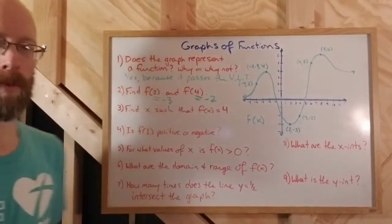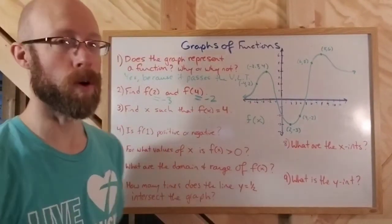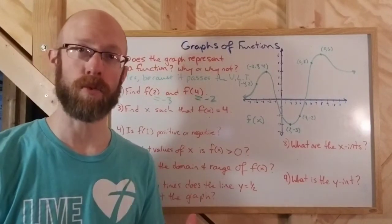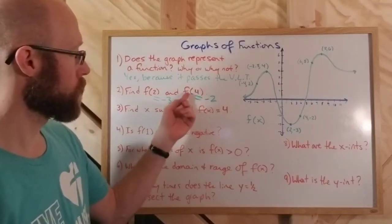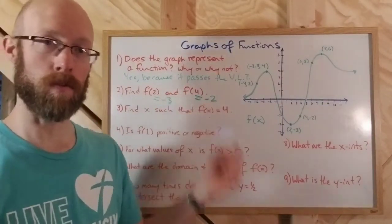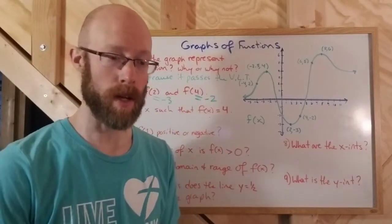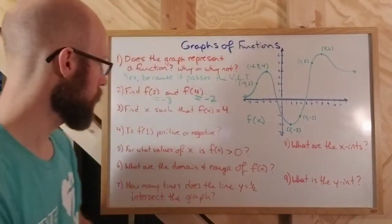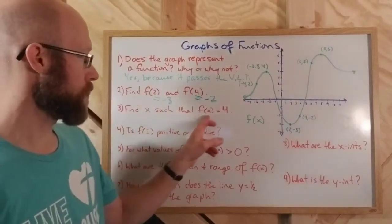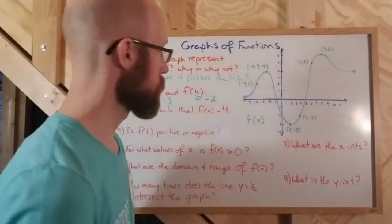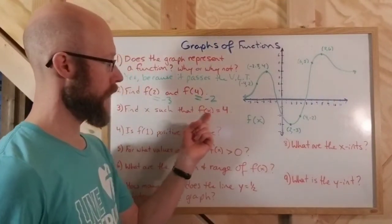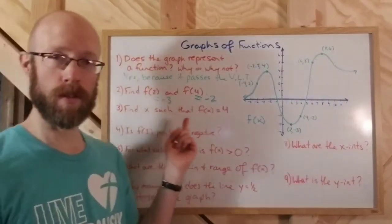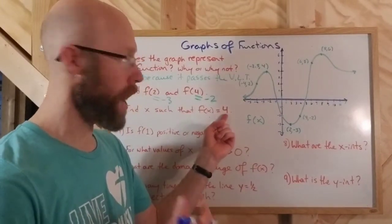Find x such that f of x equals 4. Here, the input x is unknown — we're looking for an x value, and the output is 4. f of x equals 4, so that's a y value. I go along the y-axis until I hit 4, which is up here, and then look for the x values that make that work.